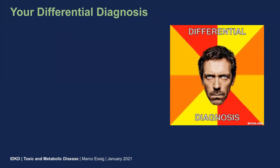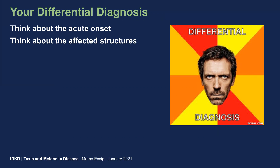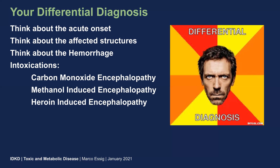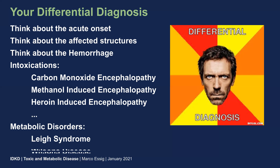Looking into the differential diagnosis of that case, we need to think about the acute onset — we have a CT study just two weeks ago which was completely normal. Think about the affected structures: we have basal ganglia, predominantly putamen involvement, and we have subcortical white matter changes like encephalopathy changes. Think about the hemorrhage — in this case a unilateral large area of hemorrhage in the basal ganglia on the left. Matching the topic, we have to think about intoxications: carbon monoxide encephalopathy, methanol-induced encephalopathy, or heroin-induced encephalopathy. We should not forget about metabolic disorders like Leigh's syndrome or Wilson's disease.